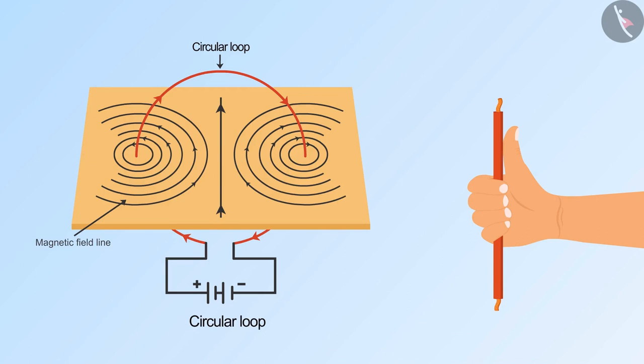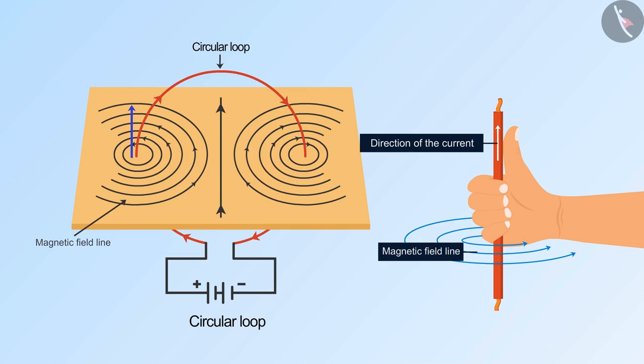If we apply the right hand thumb rule here, then we can get the direction of magnetic field lines easily. At the surface, current is flowing in the upward direction, then the fingers wrapping the conductor will tell the direction of the field lines.